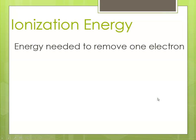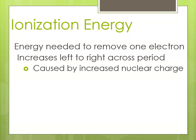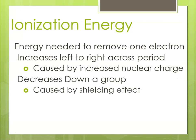Ionization energy is the energy needed to remove an electron. It increases from left to right across a period because of the increased nuclear charge — as the pull of the nucleus increases, it's harder to remove an electron. It decreases from top to bottom as the shielding effect takes place and the atom gets larger, so the electrons are farther from the nucleus and easier to pull off.